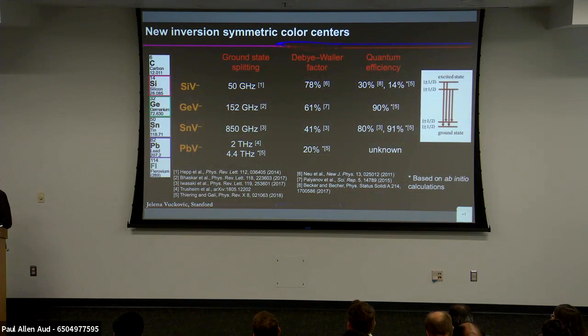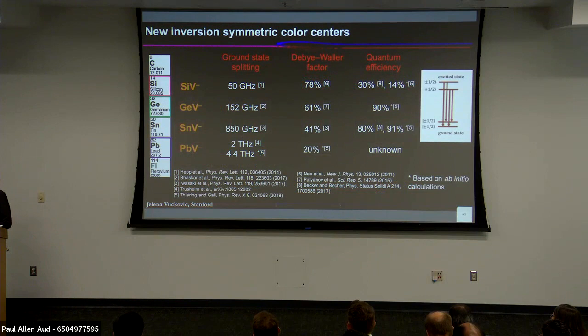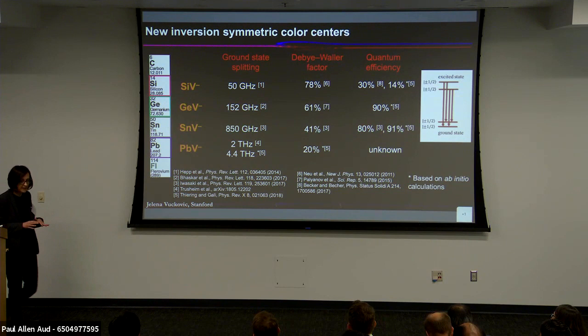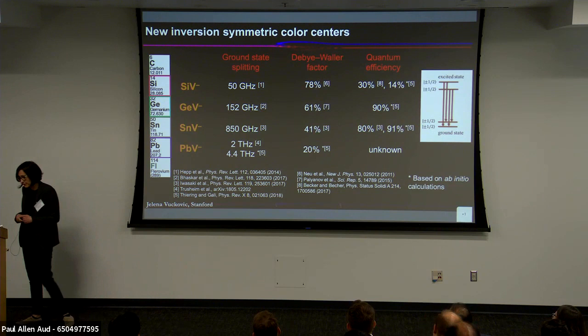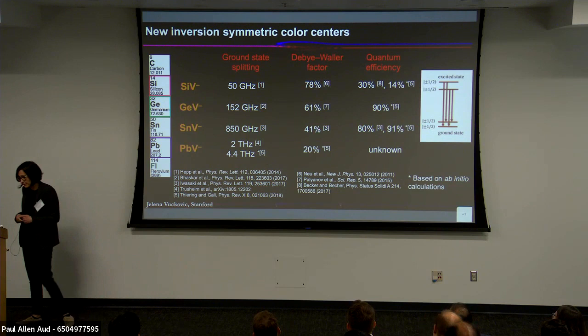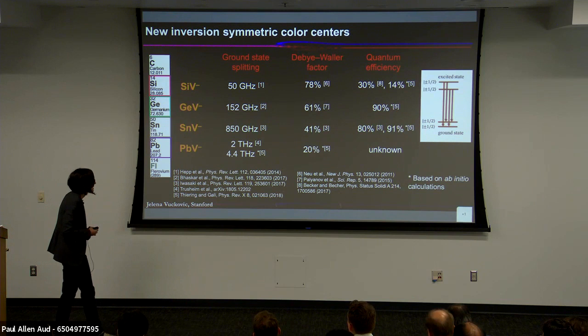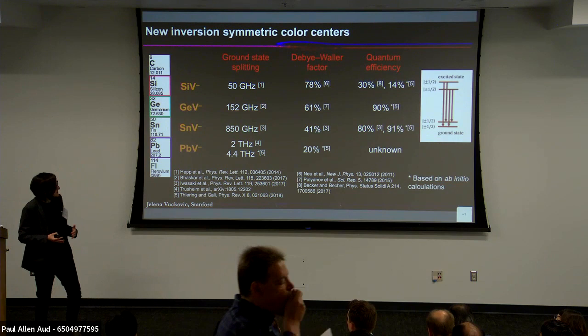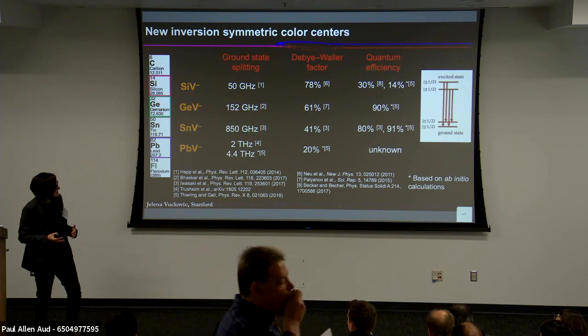There is a lot of activity on silicon vacancy in diamond, but the best results have still been obtained at millikelvin temperatures in dilution refrigerators. The reason is that the ground state splitting for silicon vacancy is only 50 gigahertz. At a few Kelvin in a closed-cycle cryostat, phonons can mix spin ground states, causing a lot of decoherence. The coherence times I mentioned were at millikelvin temperatures, and it is much easier to do optical experiments in closed-cycle cryostats than in dilution refrigerators, especially when scaling up.